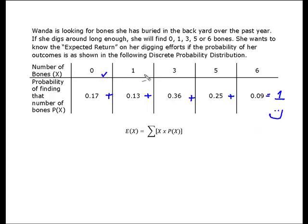She'll find 0, 1, 3, 5, or 6. So, in order to determine what her expected return is, what we're dealing with is the long-run theoretical average. In other words,